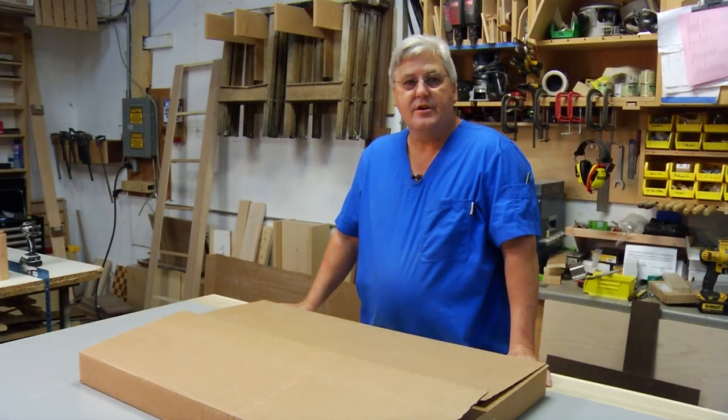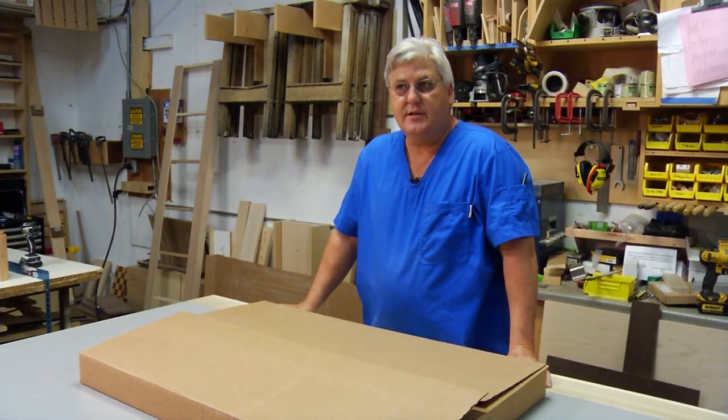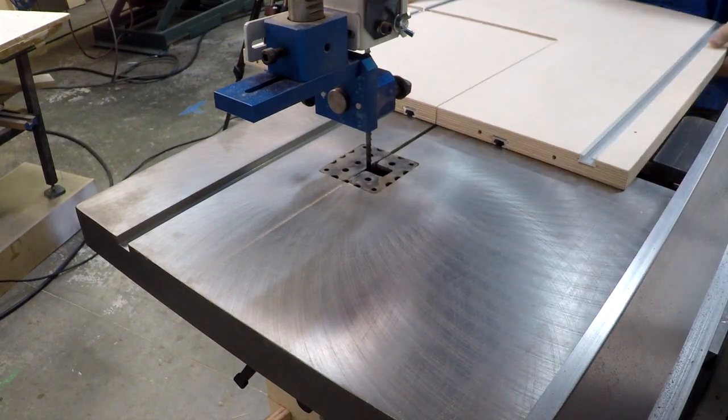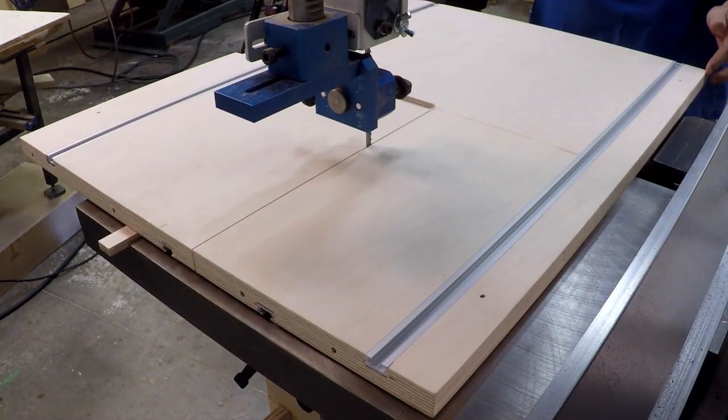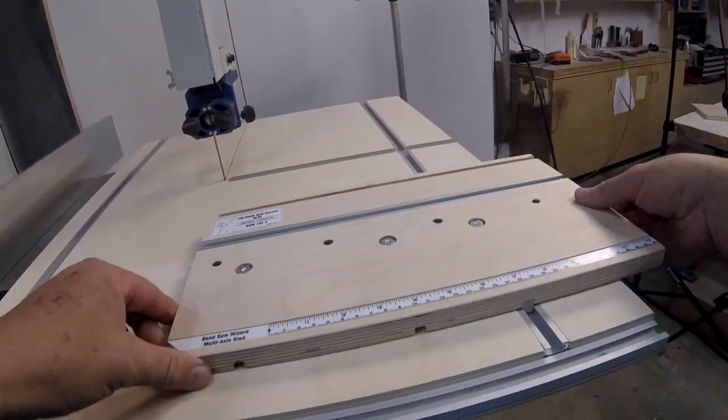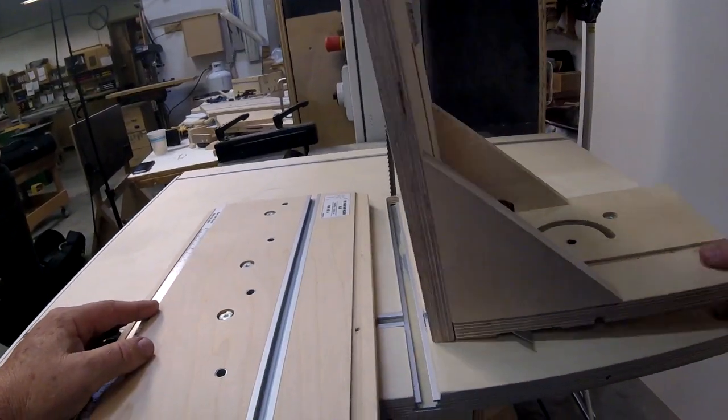Pretty much what we have here in this box is a new table. We slide this on the existing bandsaw table and adjust it, and now you have a foundation for a lot of other jigs that you could use for anything you can imagine.